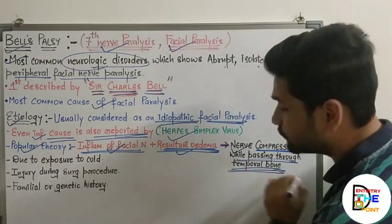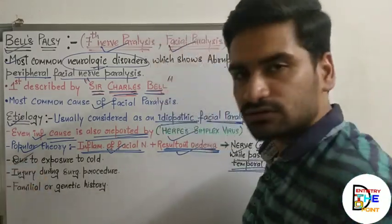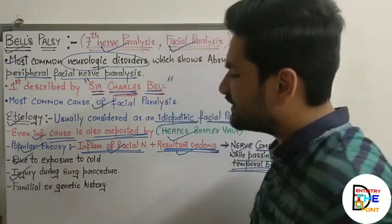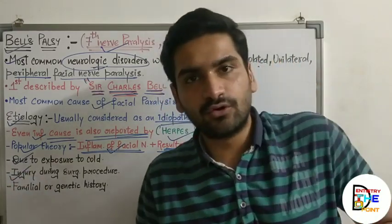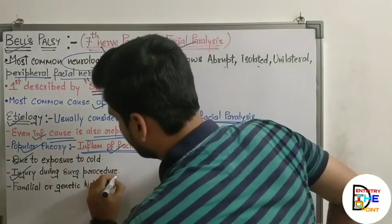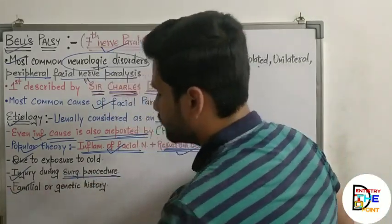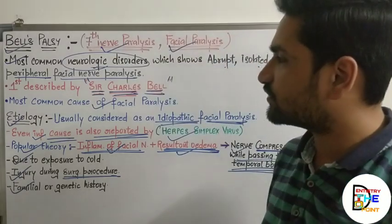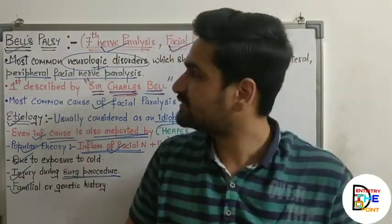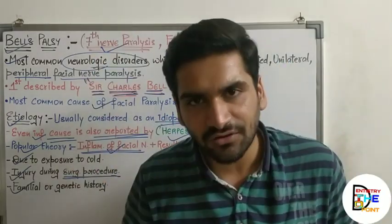Due to exposure to cold, there are also chances of paralysis. Injury during any surgical procedure — due to extraction or during surgery of the parotid gland — may injure the facial nerve. Familial or genetic history is also seen associated with various cases of Bell's palsy.